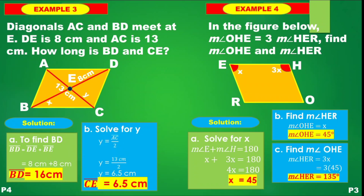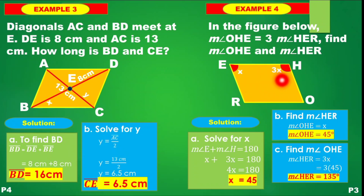To solve for the measure of angle OHE, that is 3X. So 3 times 45 — which is the value of our X. Therefore, 3 times 45 is 135. The measure of angle OHE is equal to 135 degrees.